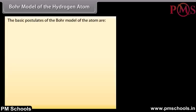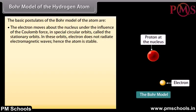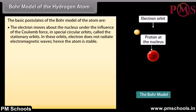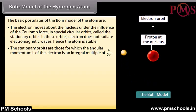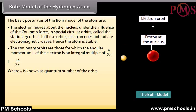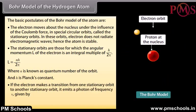Bohr's model of the hydrogen atom. The basic postulates are: the electron moves about the nucleus under the influence of the Coulomb force in special circular orbits called stationary orbits; in these orbits the electron does not radiate electromagnetic waves, hence the atom is stable; the stationary orbits are those for which the angular momentum L equals an integral multiple of h/2π: L = nh/2π, where n is the quantum number and h is Planck's constant; and if the electron makes a transition from one stationary orbit to another, it emits a photon of frequency ν = (E_i − E_f)/h.